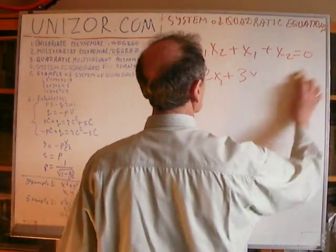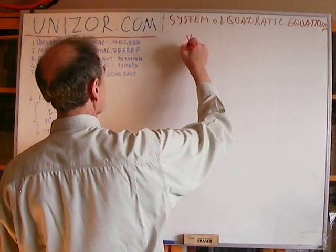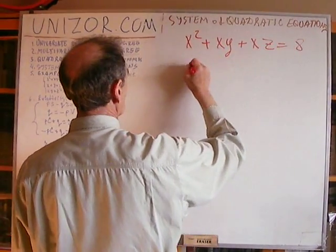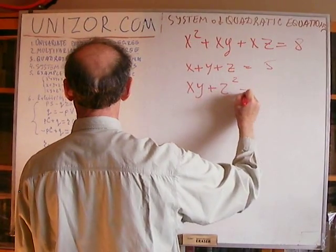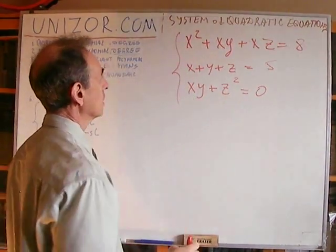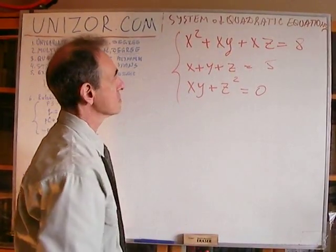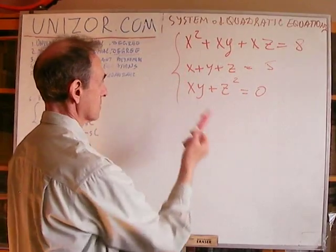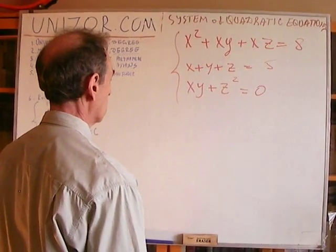I have a couple of examples here and I will just put them on the board. This is the first system I suggest as an example. This is a system of three equations. It's a quadratic system because each one of these equations is a multivariate polynomial on the left of no more than second degree, and we do have second degree polynomials on the left as well. One is linear. So this is an example of the system I am talking about.